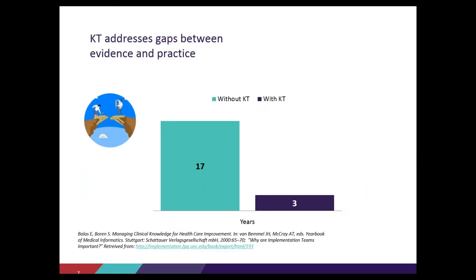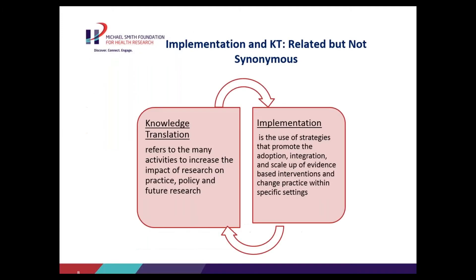One reason for the urgency of knowledge translation is the infamous 17-year gap. Researchers found that without KT strategies, it takes an average of 17 years for research to make it into policy and practice. Language is important — KT and implementation are too often spoken about as though they were the same. KT is a set of activities including knowledge synthesis, sharing, and dissemination; implementation is a KT goal for evidence that is instrumentally ready for application and scale-up.